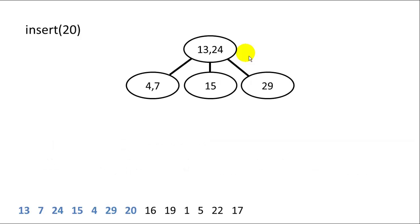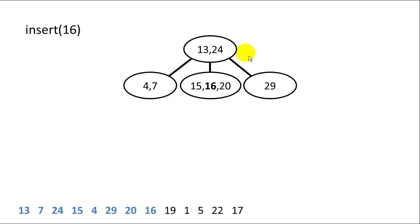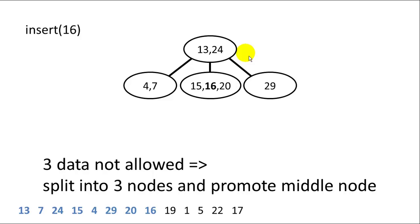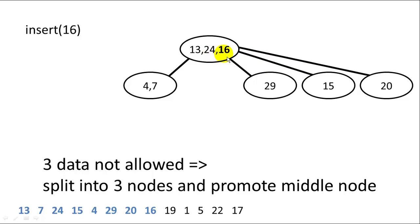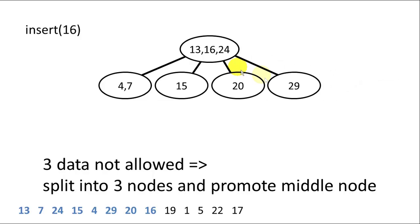Next we insert 20 — it falls between 13 and 24, so it goes into the node with 15. We sort those items and 20 is inserted. Then we insert 16, which also falls in the middle node. We add it, sort the values, and now we have 3 items in the middle node. So we promote the middle item, 16, and 15 and 20 become child nodes, creating a new subtree. We add 16 to the parent node containing 13 and 24, sort items and children, and the tree is restructured.